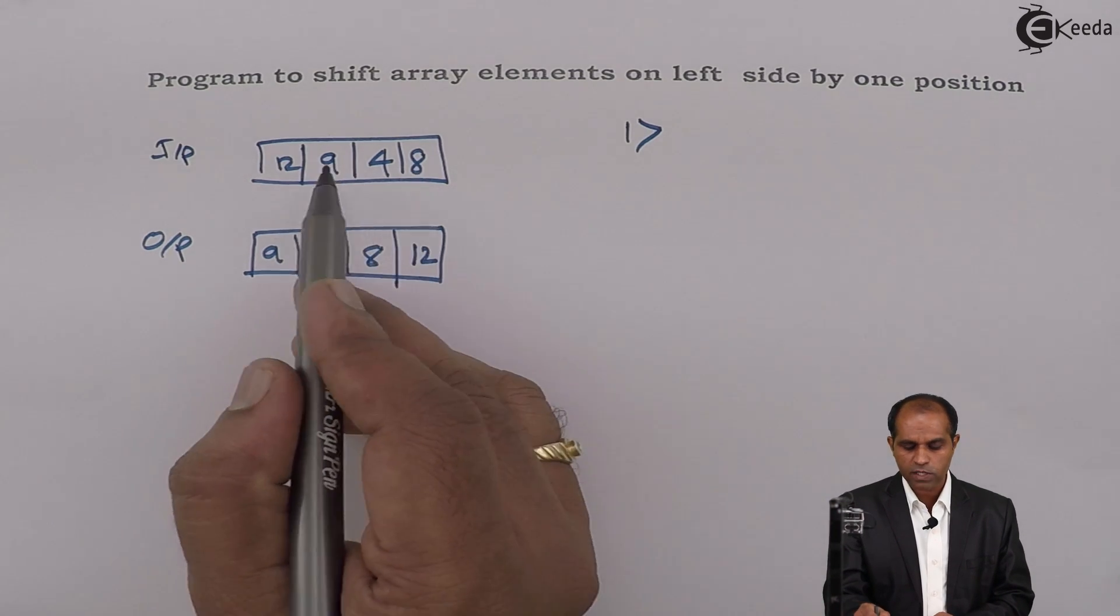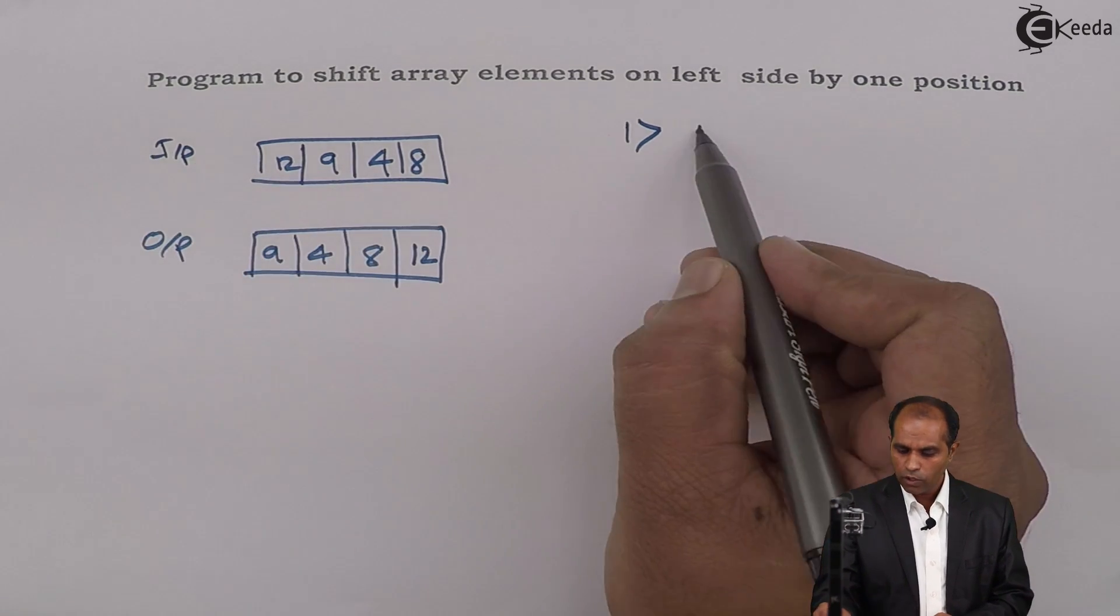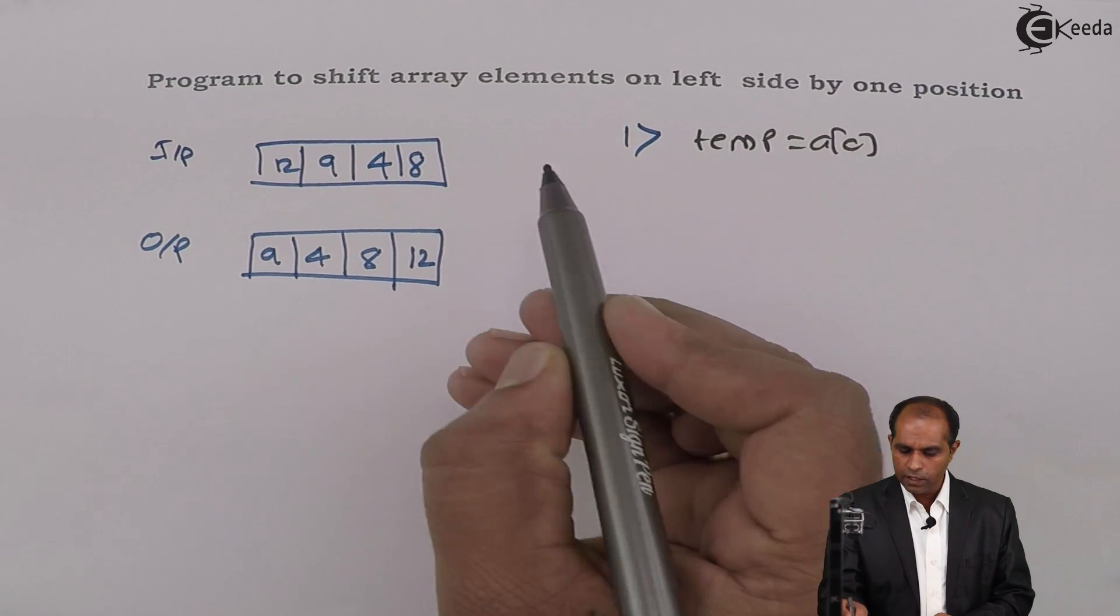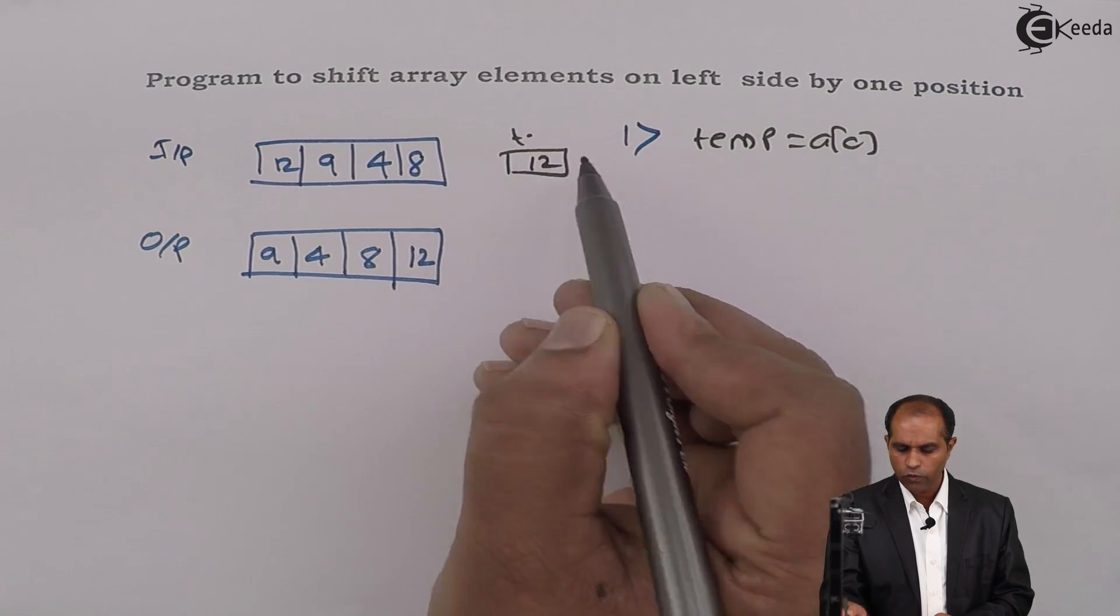The element which is going to go out should always be copied into temp. In this, when I shift the elements towards left-hand side, a[0] goes to temp. So your temp is now copied as a[0]. In this case, temp is what? 12.